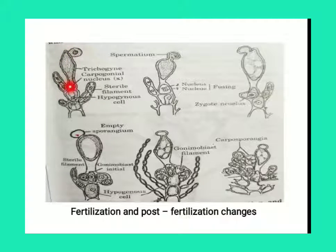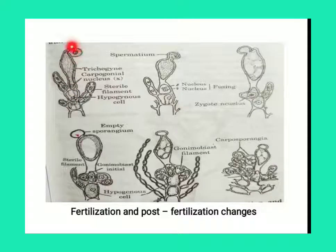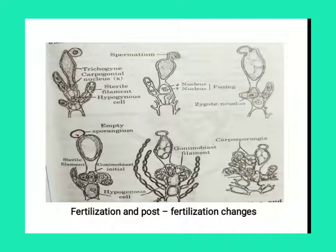This is the carpogonium; the spermatia and carpogonium fuse together and are converted into the zygote. This is known as the fertilization process.